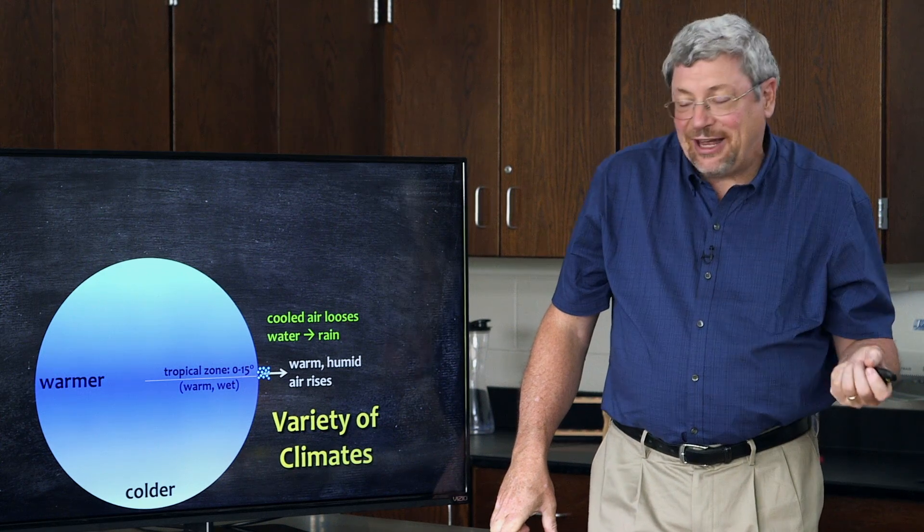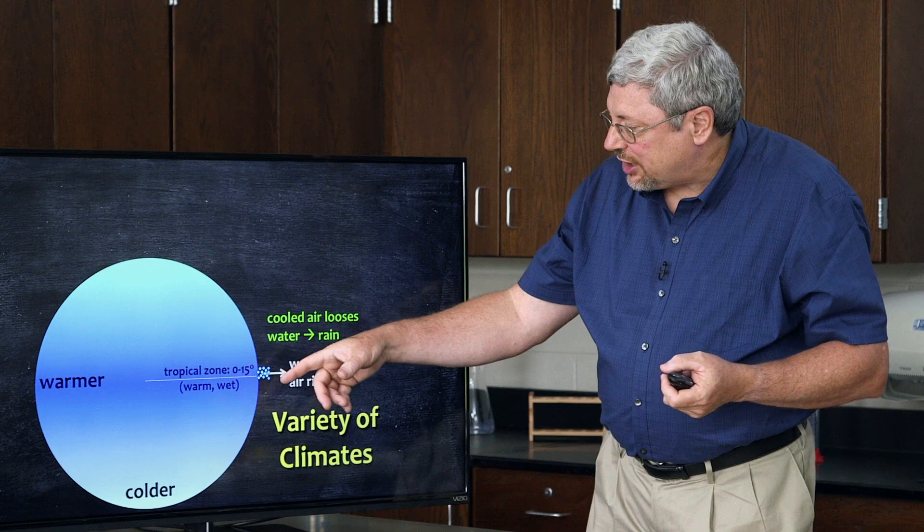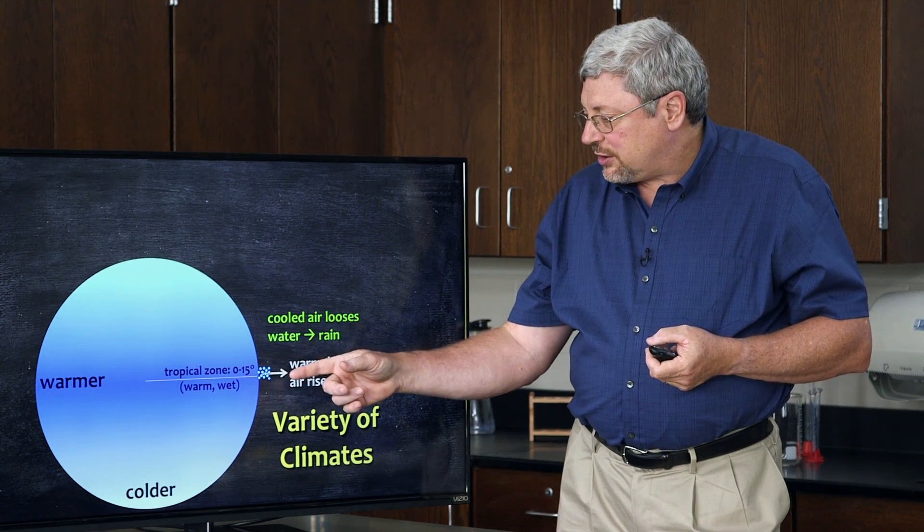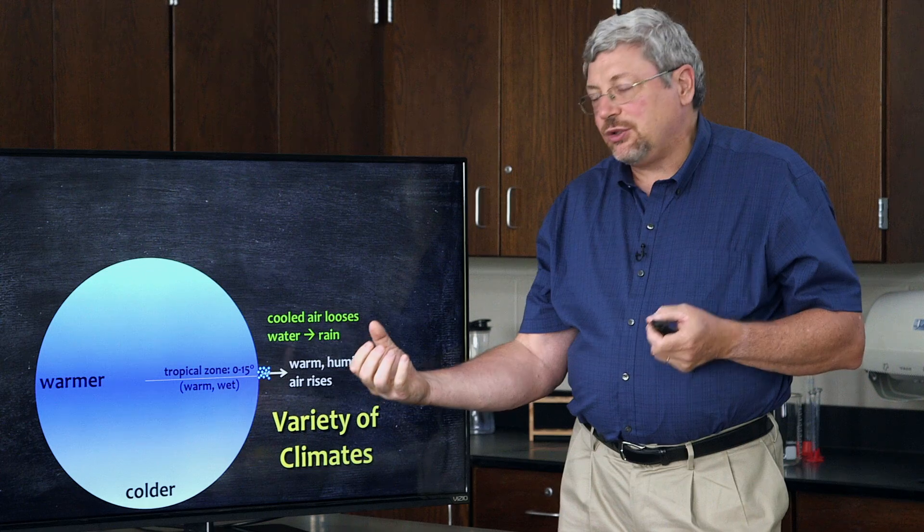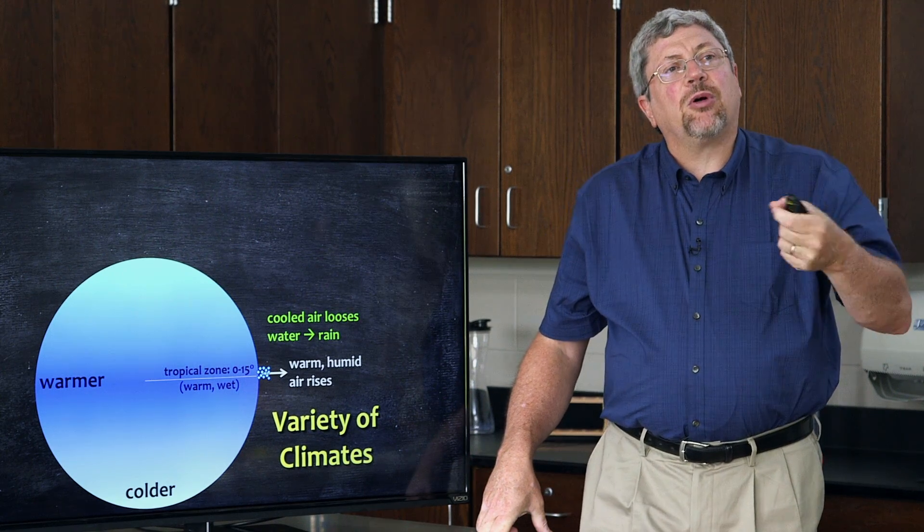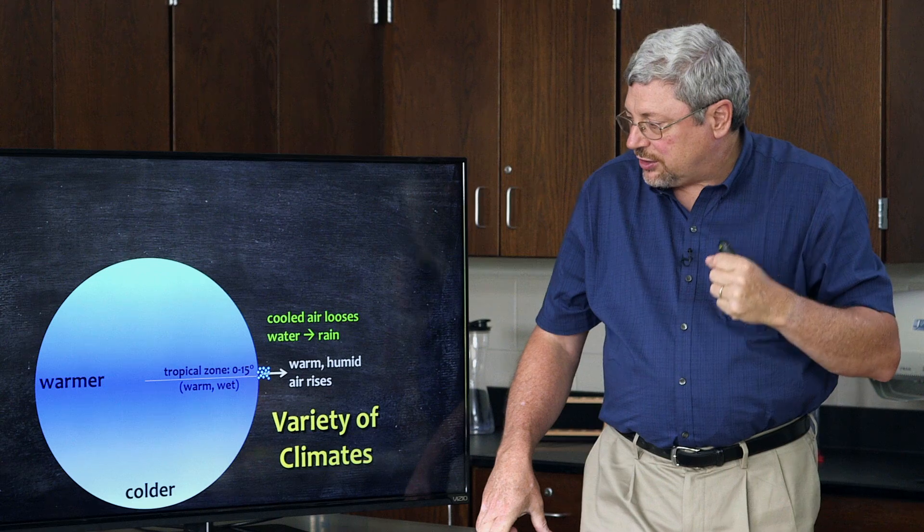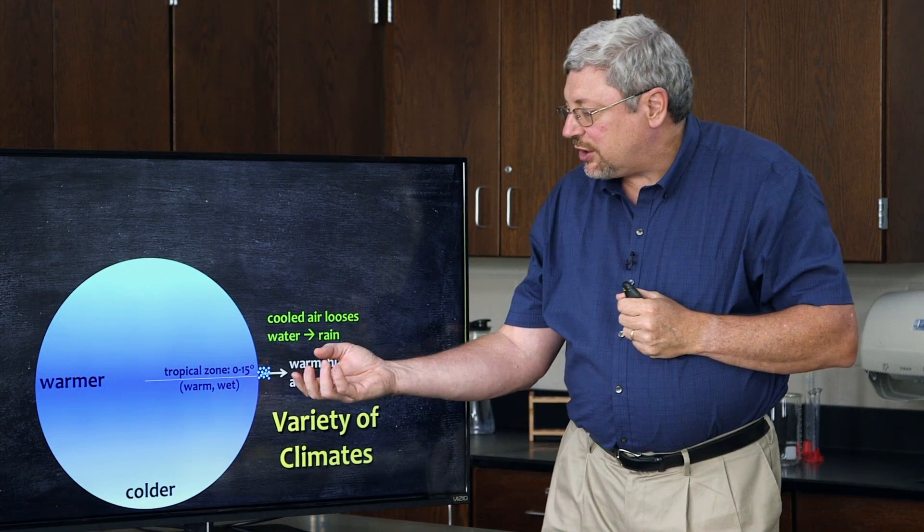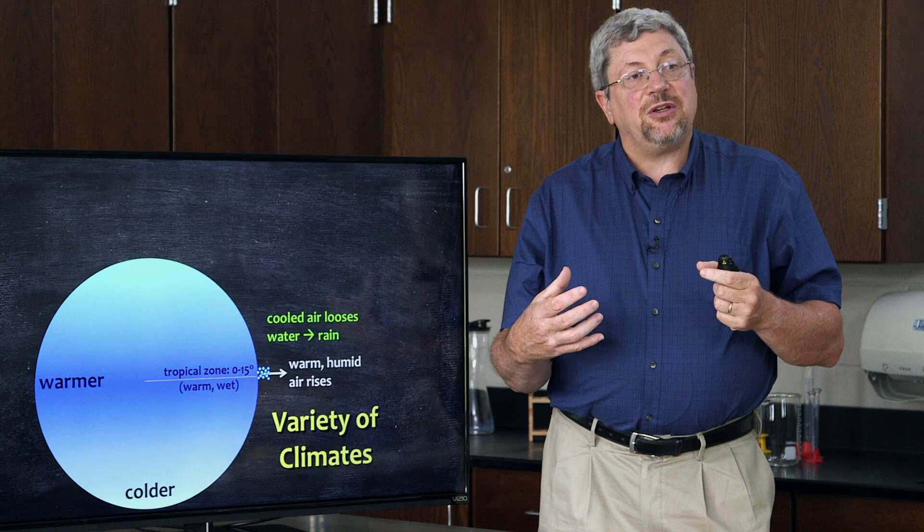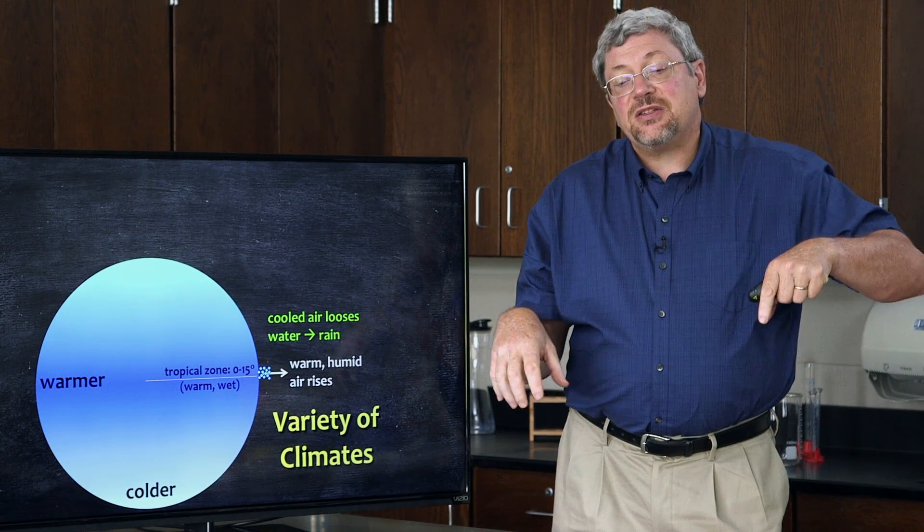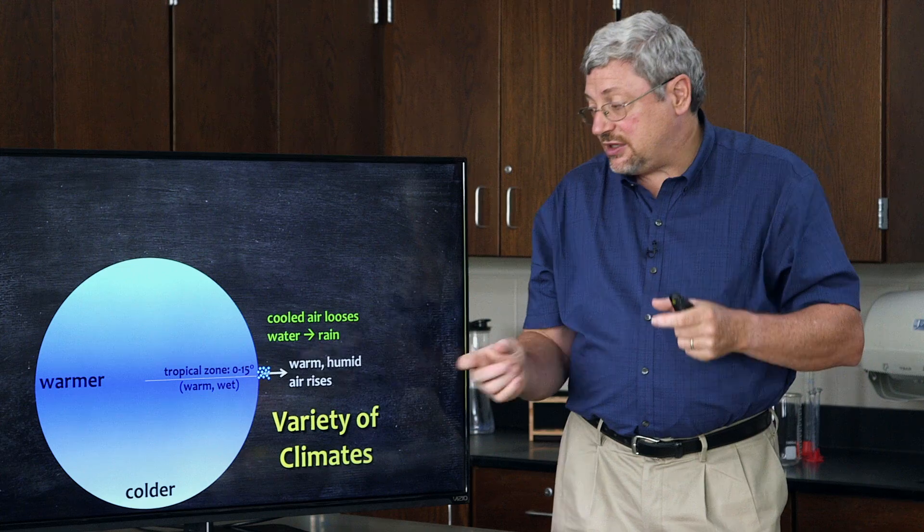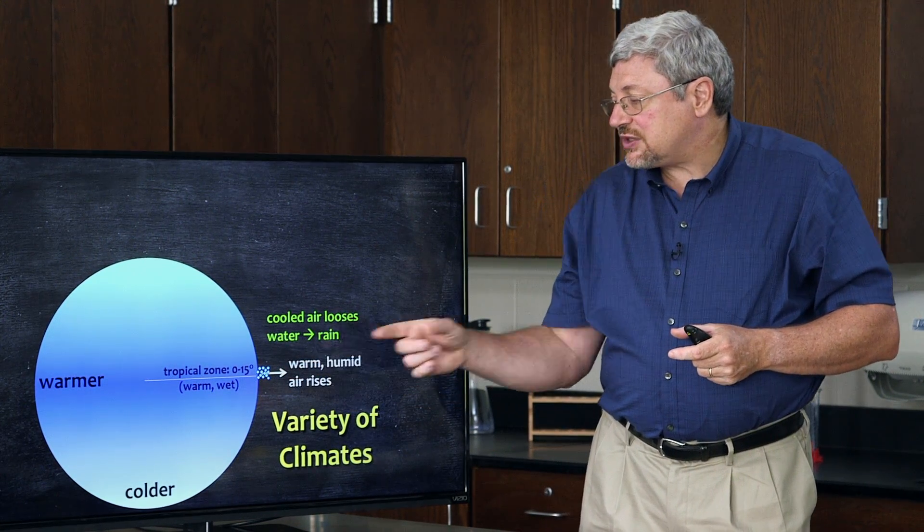The consequence of that is that we have, at the equator, what we call the tropical zone of the earth. Within 0 and 15 degrees of the equator, we have warm air that is also wet, it is carrying a bunch of water. In fact, the warmer air is, the more water it can evaporate into it, the more water it can carry. This warm air at the equator evaporates water from off of the ocean and bodies of water, and the air rises from the surface of the earth.